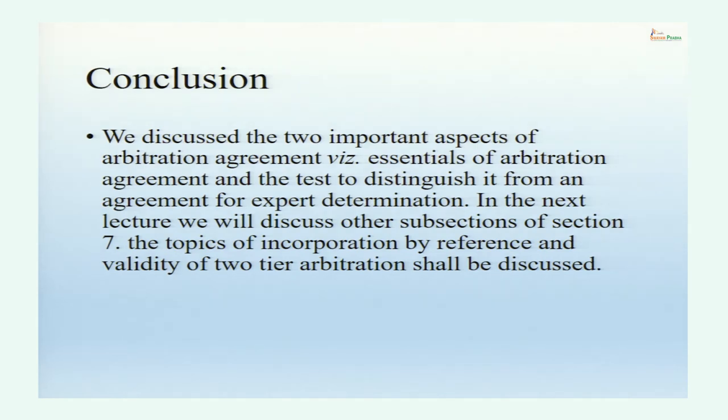To summarize this session: we discussed two important aspects related to arbitration agreement. We understood the essentials of a valid arbitration agreement with the help of certain cases, and we also understood how an arbitration agreement can be distinguished from an agreement for expert determination. In the next lecture, we will talk more about Section 7 and other aspects of arbitration agreement. Thank you very much.